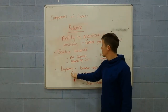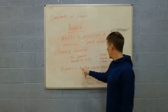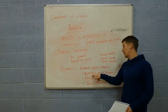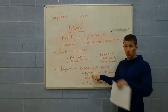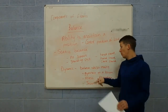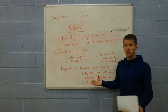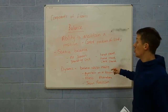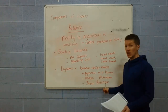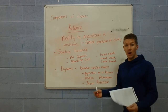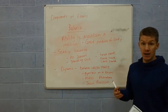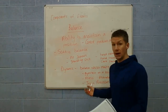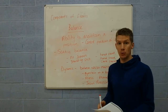The second type is dynamic balance, where you are balancing whilst moving. A traditional example of this would be a gymnast on a beam. Other sportsmen, such as Maradona and Jason Robinson, are quite famous for having a really elegant balance whilst playing their sport.